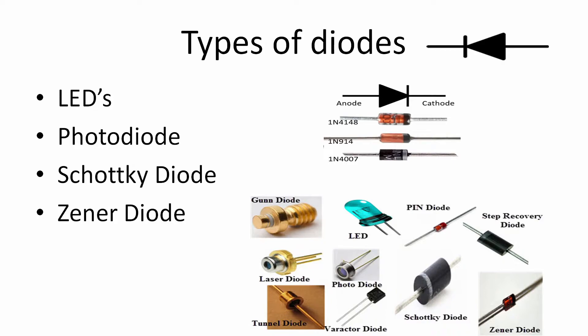There are many different types of diodes. LEDs are a very common type. There are also photodiodes, Schottky diodes, and Zener diodes. They all share the property that current flows in a certain direction, but they each perform different functions.